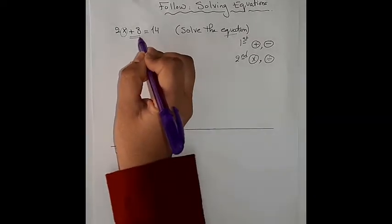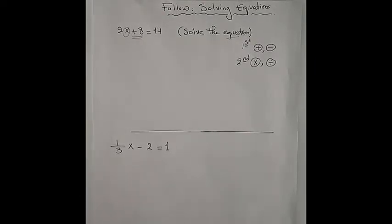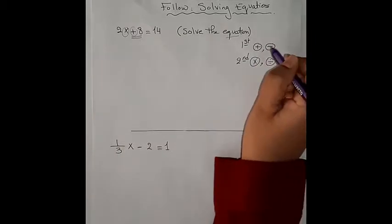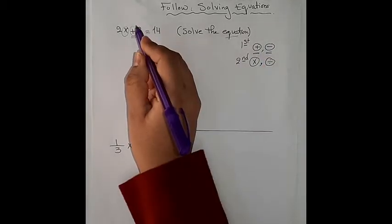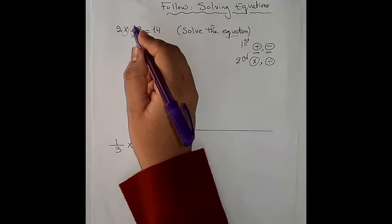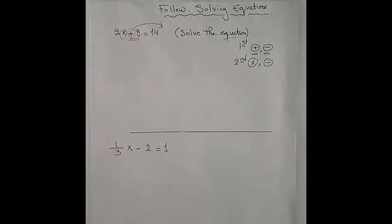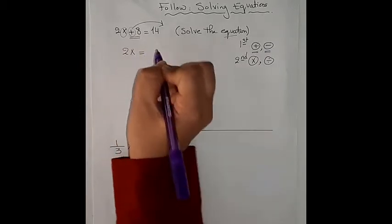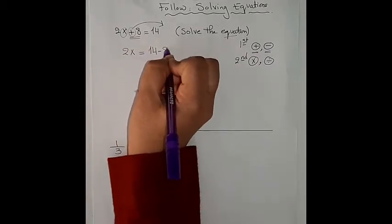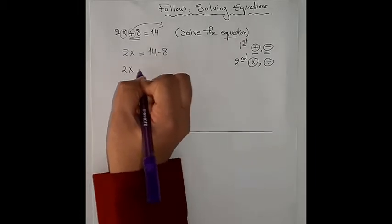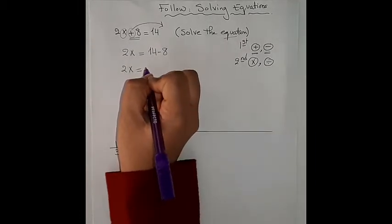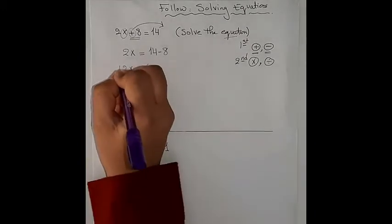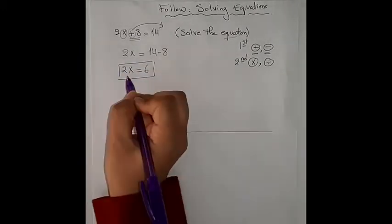We have plus 8, so we will move 8 to the other side. We start first with addition or subtraction. Here we have plus 8, so we will move 8 to the next side with an inverse operation, which is subtraction. So we have 2x equals 14 minus 8, which gives us 2x equals 6.